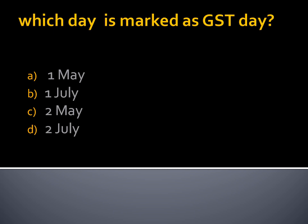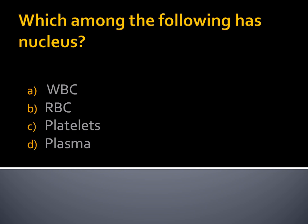Question 2: Which among the following has a nucleus? Option A, WBC. Option B, RBC. Option C, Platelet. Option D, Plasma. Among these, WBC has a nucleus. RBC and Platelets do not have a nucleus.